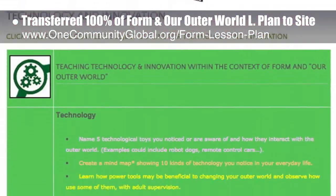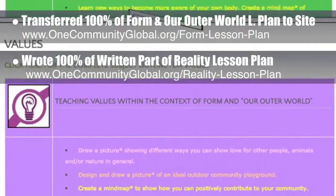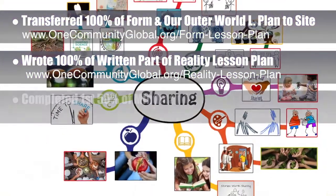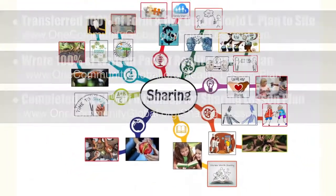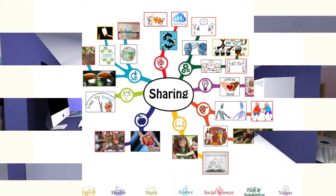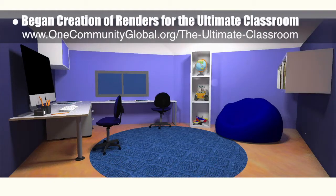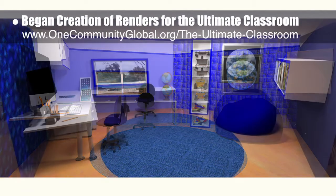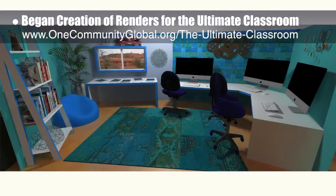Behind the scenes, we completed 100% of the written part of the Reality lesson plan. We also completed the first 50% of the mind map for the Sharing lesson plan, which you see here. In addition, the core team began creation of renders for the ultimate classroom: the Indigo Room, with a focus on global and historical perspectives and celebrating diversity, and the Blue Room, with a focus on communication, empathy, feelings, and the ability to express oneself, as shown here.